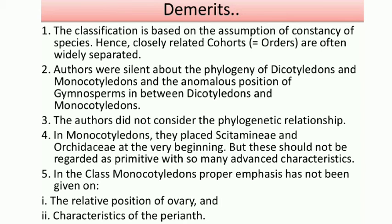Second demerit: the authors were silent about the phylogeny of Dicotyledons and Monocotyledons, and about the anomalous position of Gymnosperms placed in between Dicotyledons and Monocotyledons. They kept Dicot, then Gymnosperm, then Monocot, but gave no explanation for why Gymnosperms were placed between Dicot and Monocot — that was the main demerit.